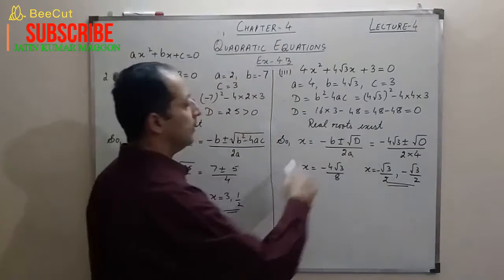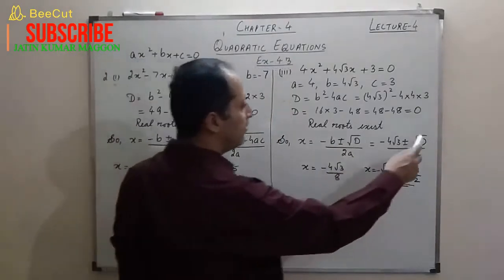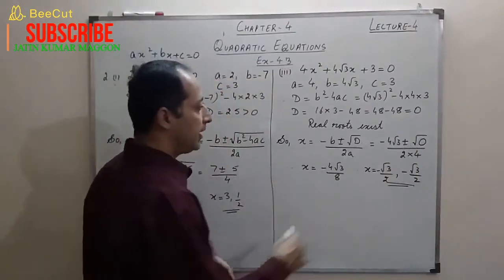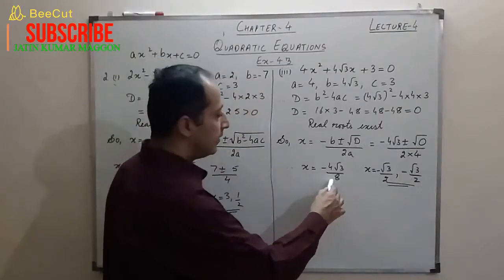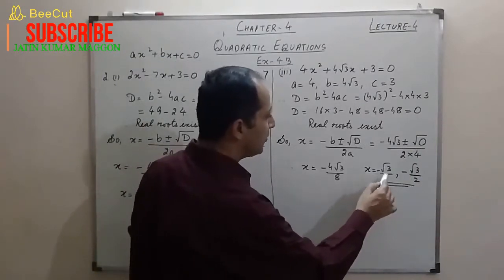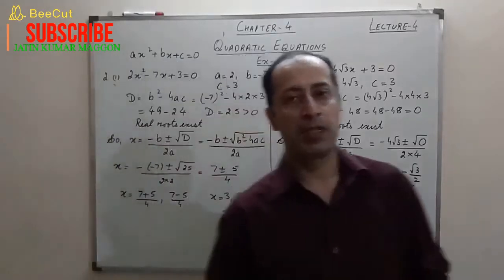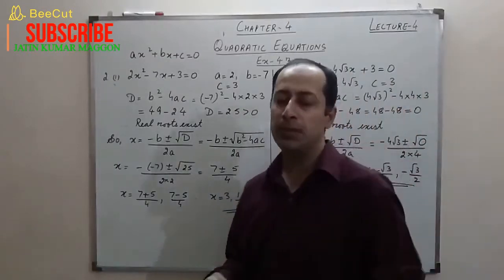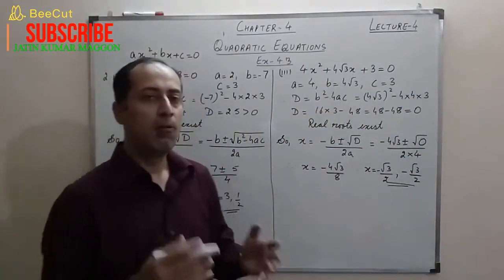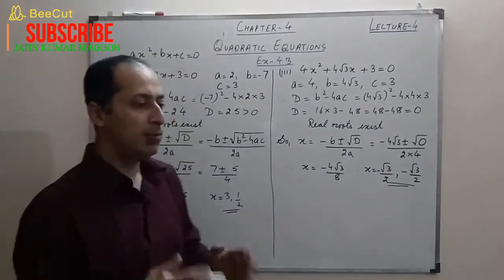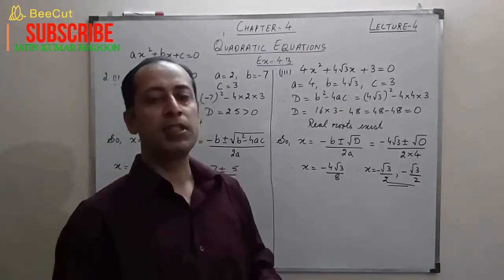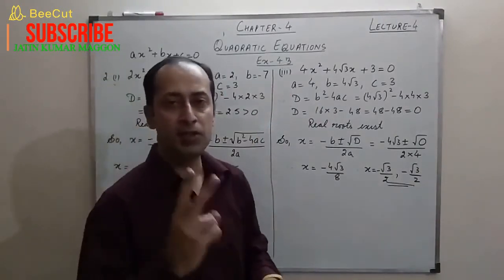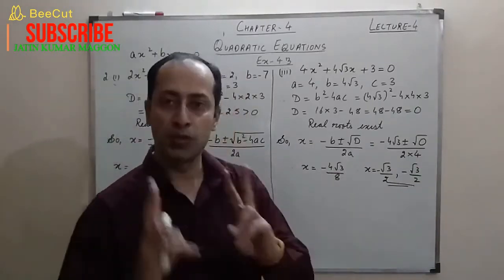Applying the quadratic formula with D = 0: the square root of 0 is 0, so x = −4√3 / 8 = −√3/2. Since it's a quadratic equation with degree 2, we write the same root twice: x = −√3/2 and x = −√3/2. Whatever the degree of the polynomial, that many roots it will have.